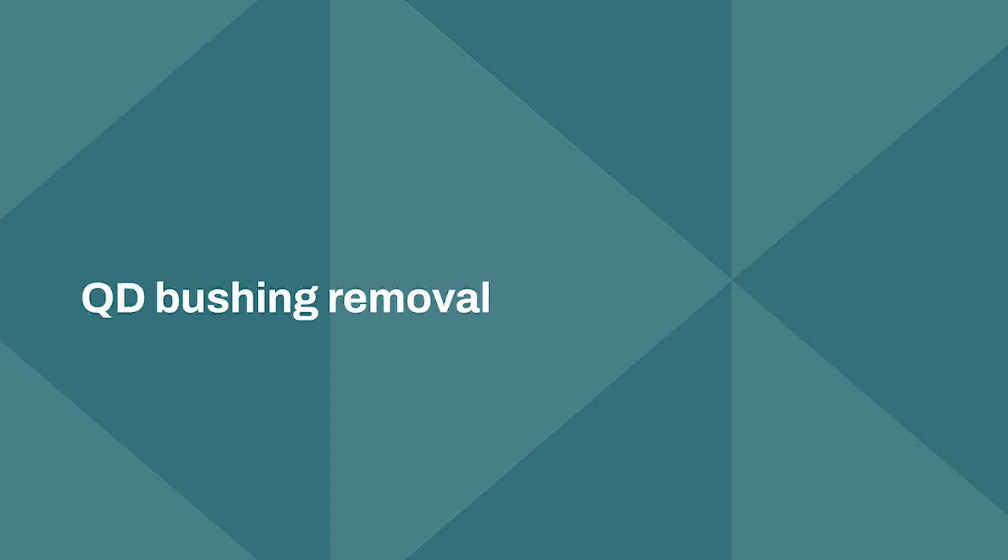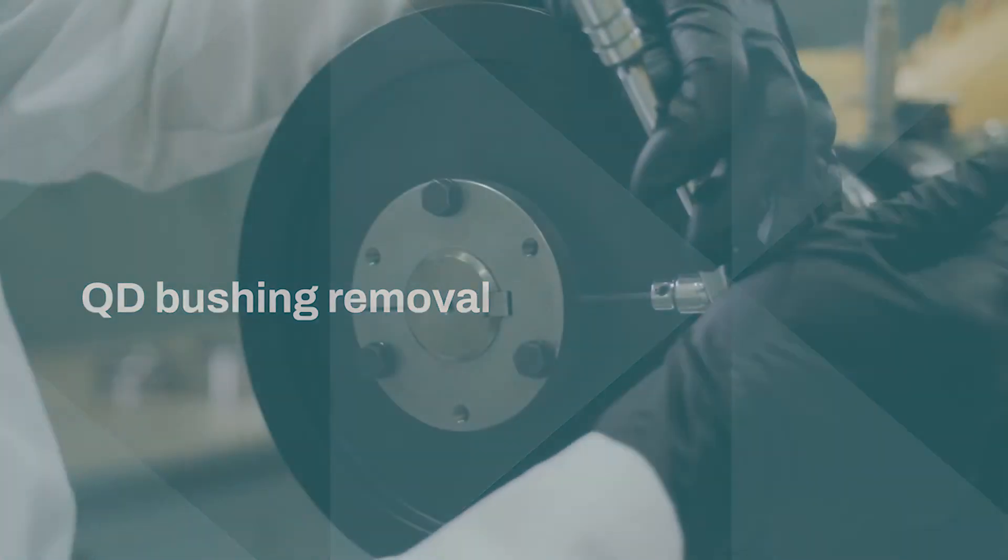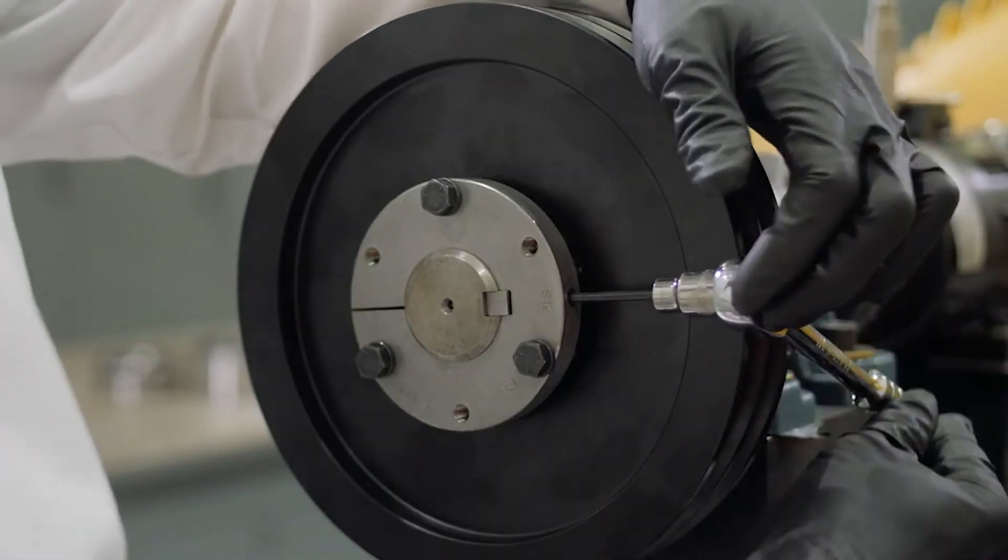The removal of QD bushings is simple. First, loosen the set screw above the keyway.